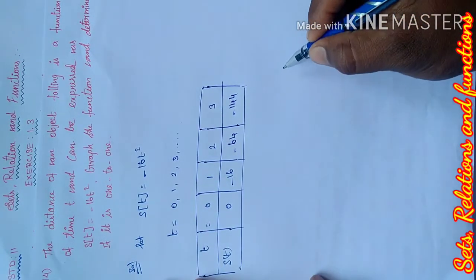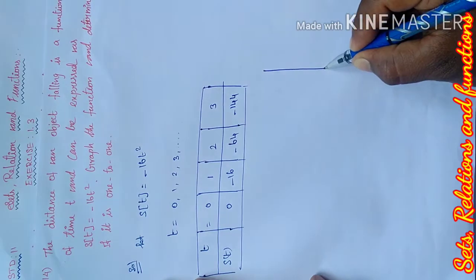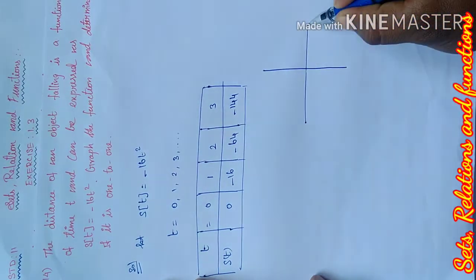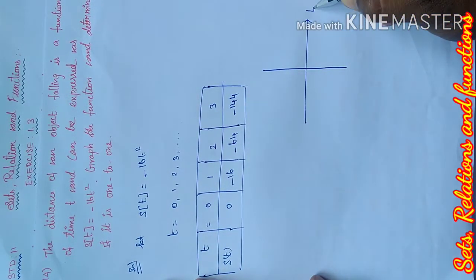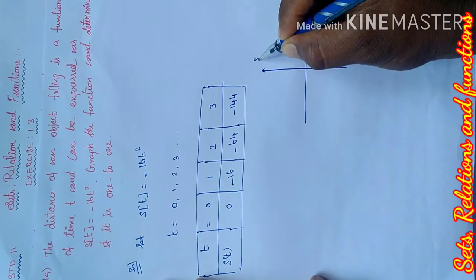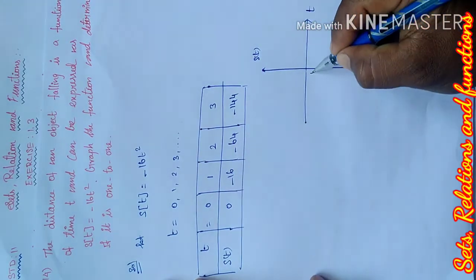Let's define the graph. We have a vertical line and horizontal line. It's not a vertical line, the vertical line is t and horizontal is s of t.